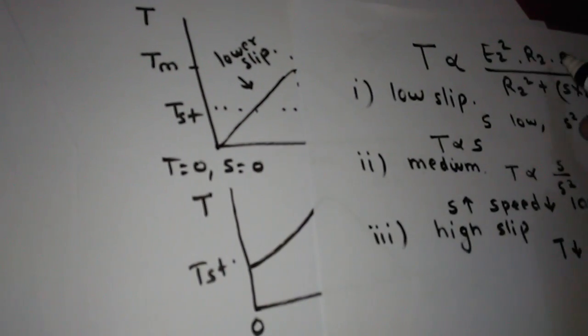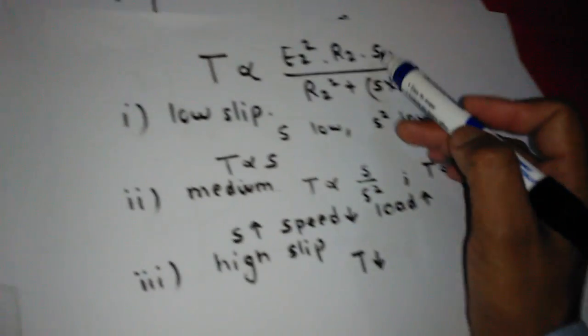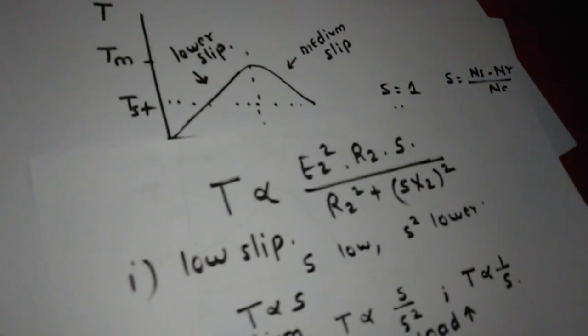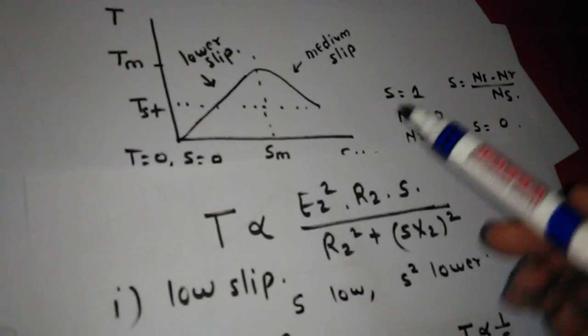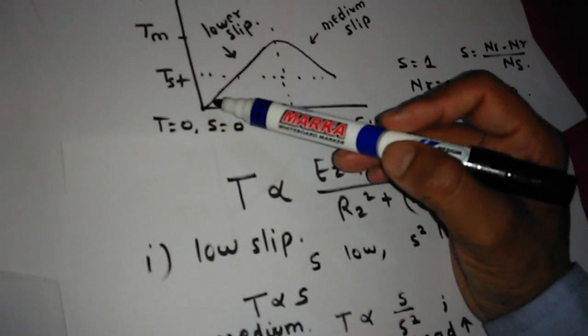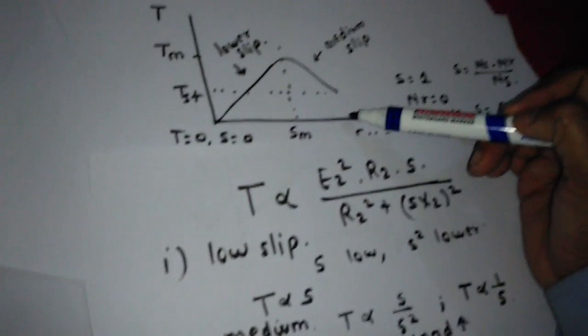When S equals 0, T is also 0. From the lower slip region we can find that when slip is very low, T is proportional to S. So this is the linear characteristic between torque and slip.